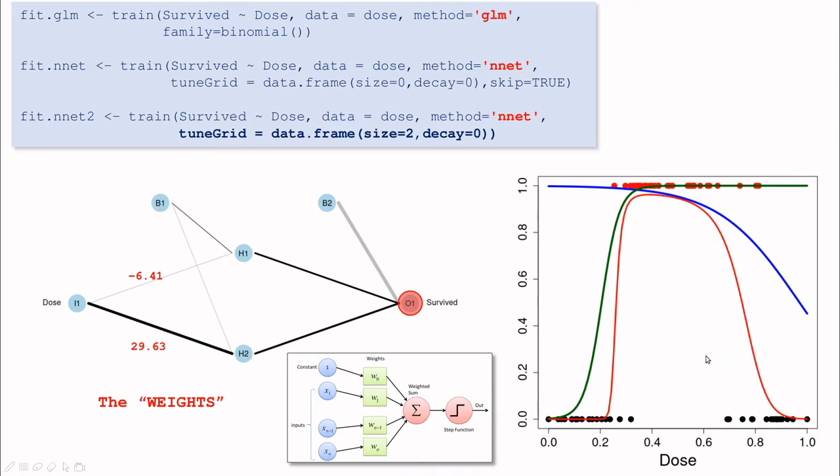We have this function which is a kind of nonlinear combination, and nonlinearity comes from the activation function, but it's capturing more or less the shape of this curve. As you can see here, the fit is not very good, and there is one reason for that.